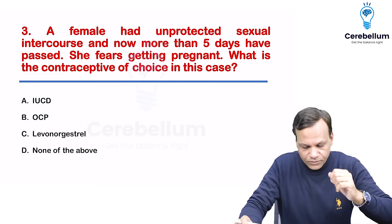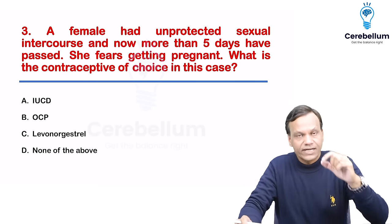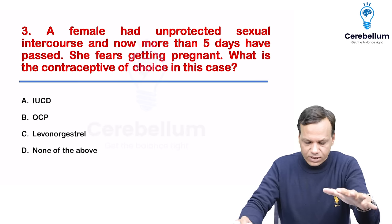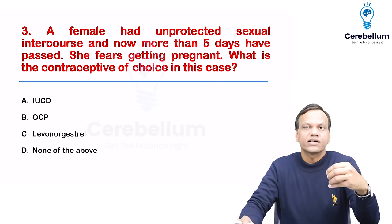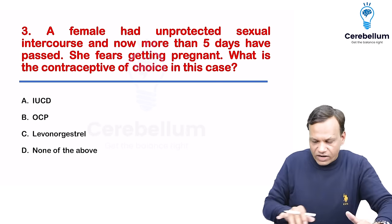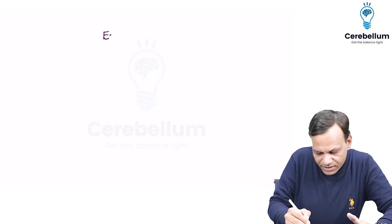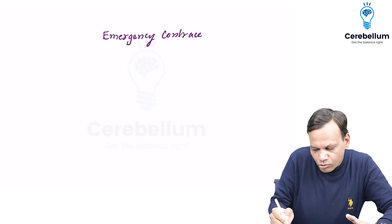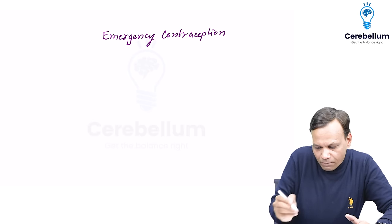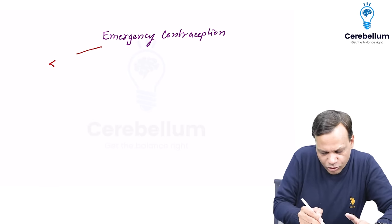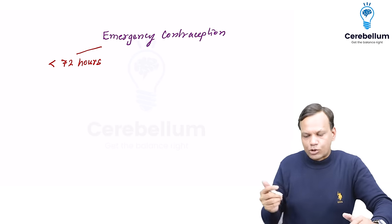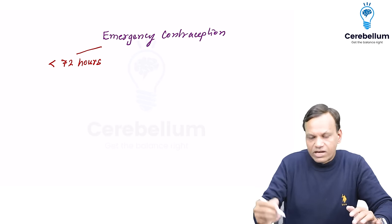Next question: a female had unprotected sexual intercourse and more than five days have passed. She fears getting pregnant. What is the contraceptive of choice? When we see emergency contraception, we can divide it into three parts based on timing.